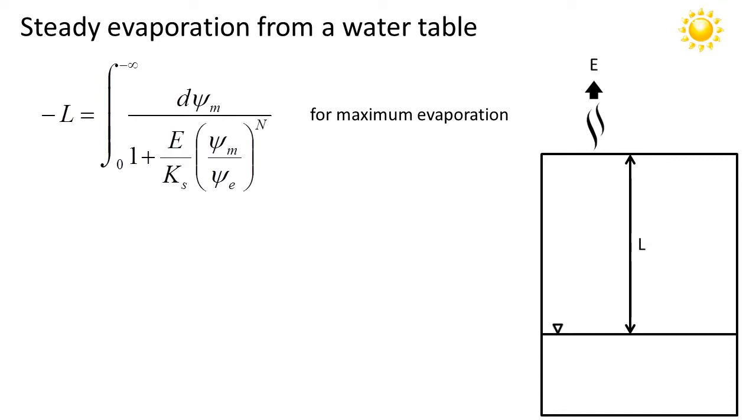Proceeding further, we notice that the integral on the left-hand side evaluates simply to minus L. And on the right-hand side, I've chosen to specify for the upper limit of the integration minus infinity. So the matrix potential at the soil surface has been set to minus infinity. And I've chosen this because this represents the maximum possible evaporation rate in this scenario.